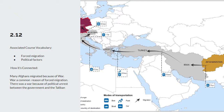Topic 2.12. The associated course vocabulary is forced migration and political factors. How this is connected is that many Afghans migrated because of the war. War is a common reason for forced migration. There is a war because of political unrest between the government of Afghanistan and the Taliban.